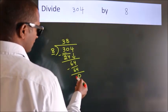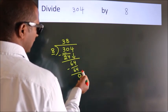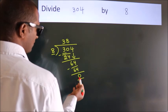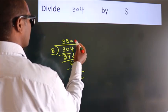After this, no more numbers to bring down. And we got remainder 0. So, this is our quotient.